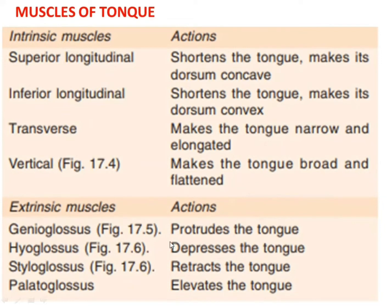The extrinsic muscles are: genioglossus, hyoglossus, styloglossus, and palatoglossus. Their actions are: genioglossus protrudes the tongue, hyoglossus depresses the tongue, styloglossus retracts the tongue, and palatoglossus elevates the tongue.